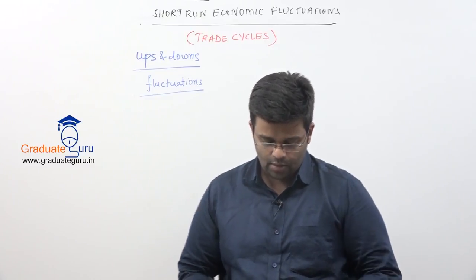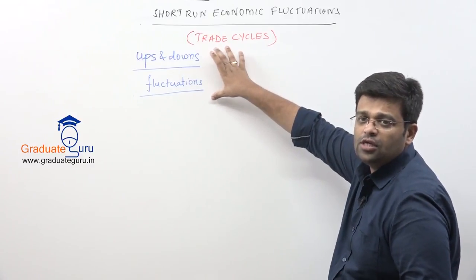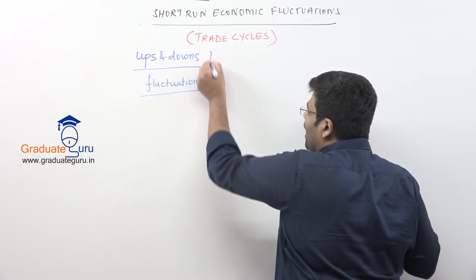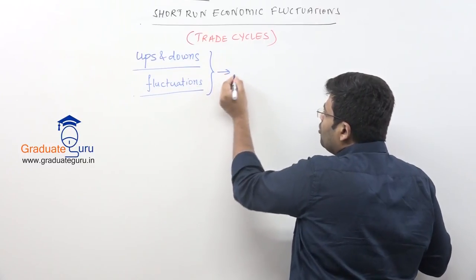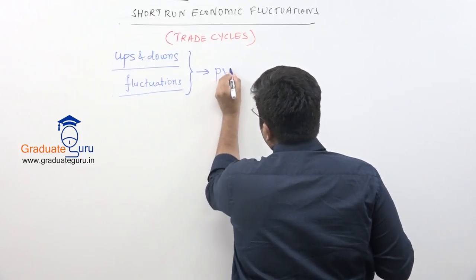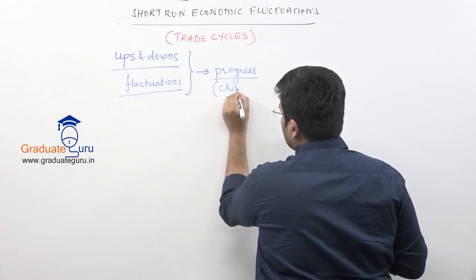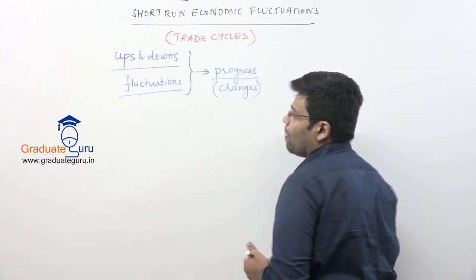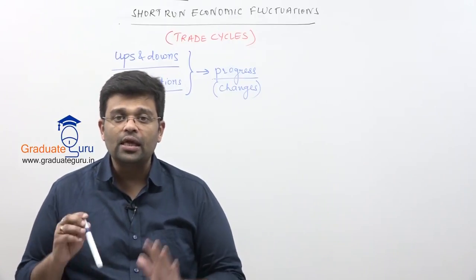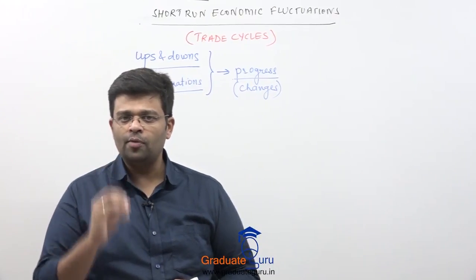Fluctuations usually happen because these things are important indicators. They show what changes have happened in the economy over a period of time. So we say that these are signals of progress or further movement of the economy in our country. That is why we are going to study trade cycles in macroeconomics. Trade cycles are a very, very important part of macroeconomics.